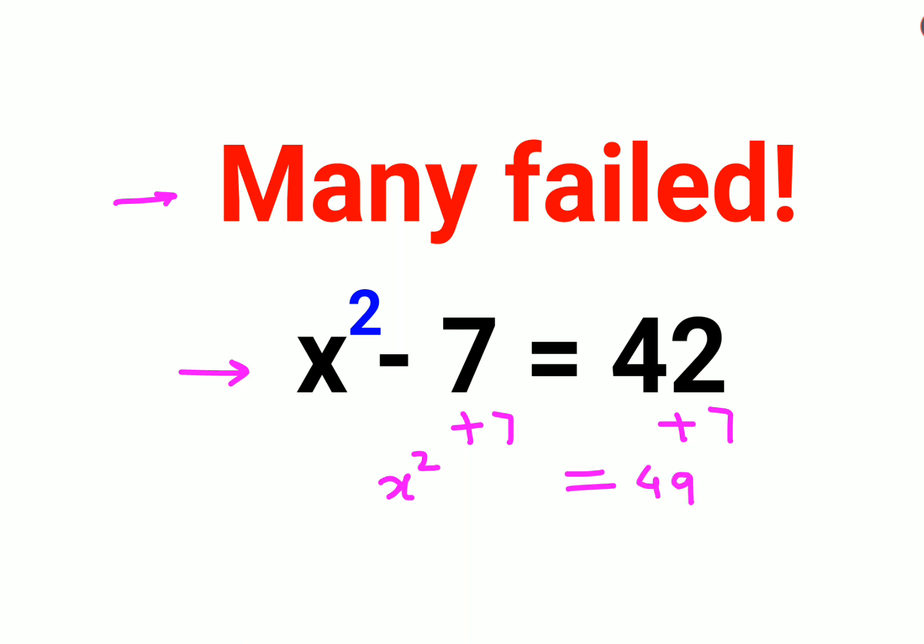Now remember, if there is a variable involved, we will have to take square roots on both sides to find the value of x. Understand, whenever you take a square root, especially when it is equal to a variable, at that time the answer will be plus minus 7.